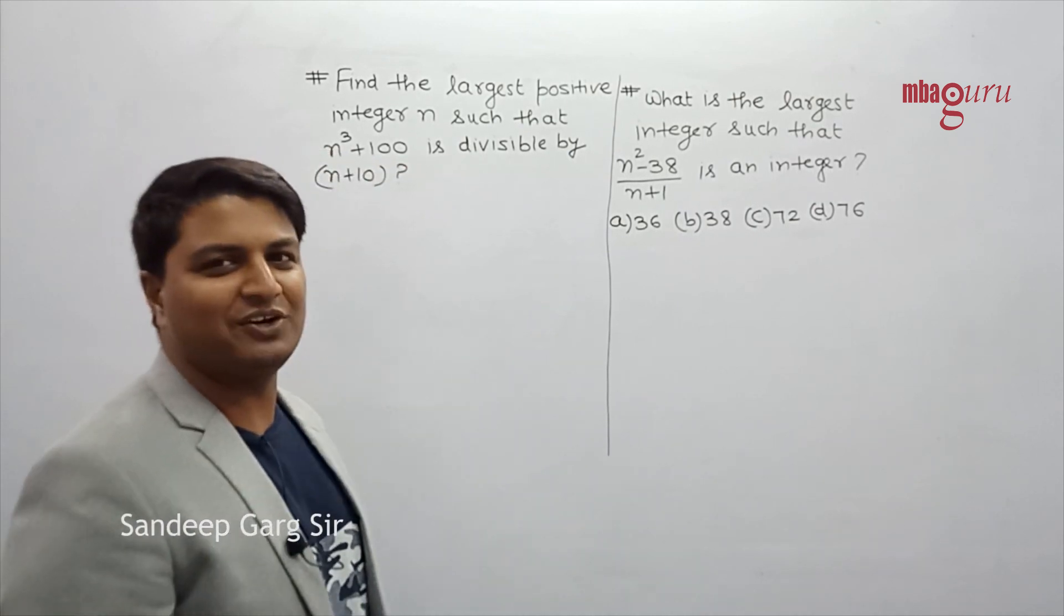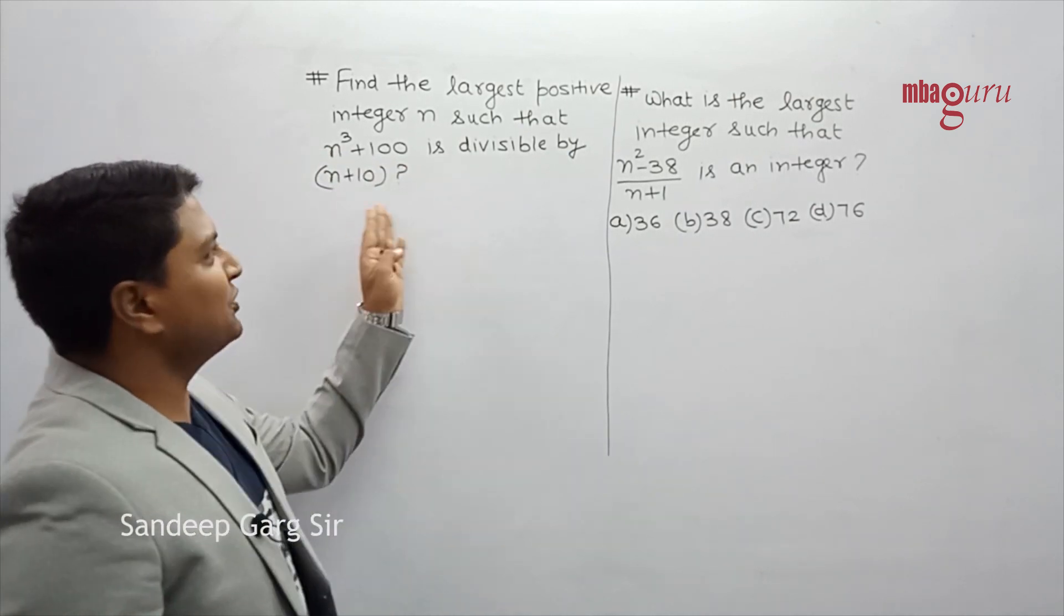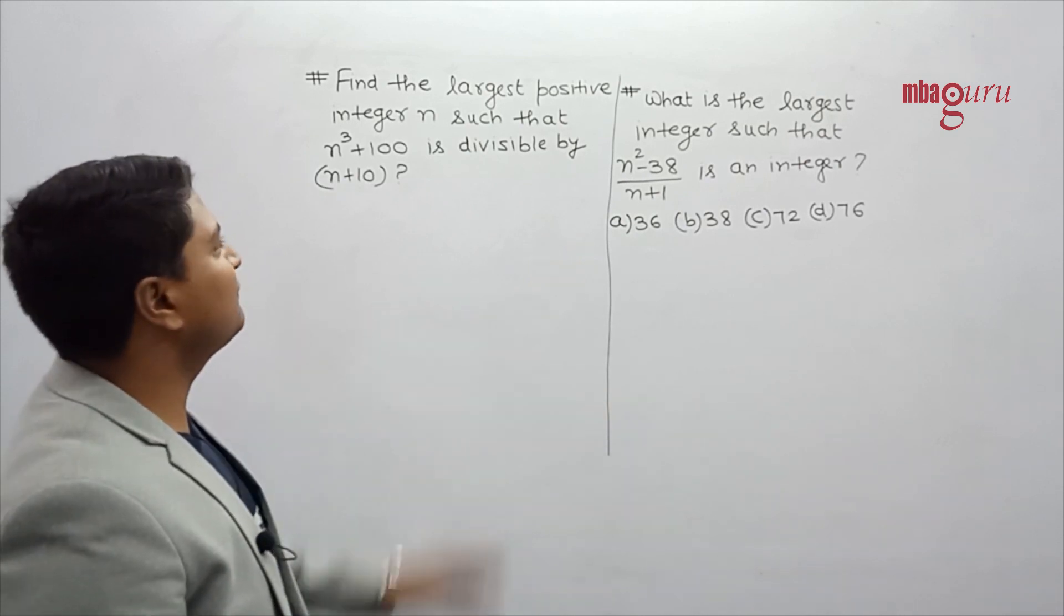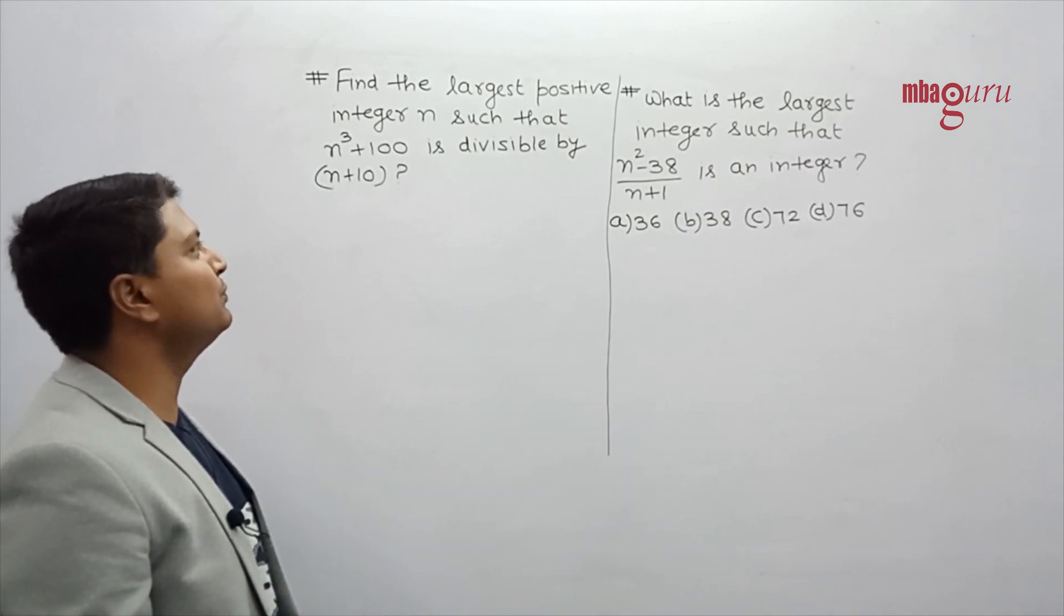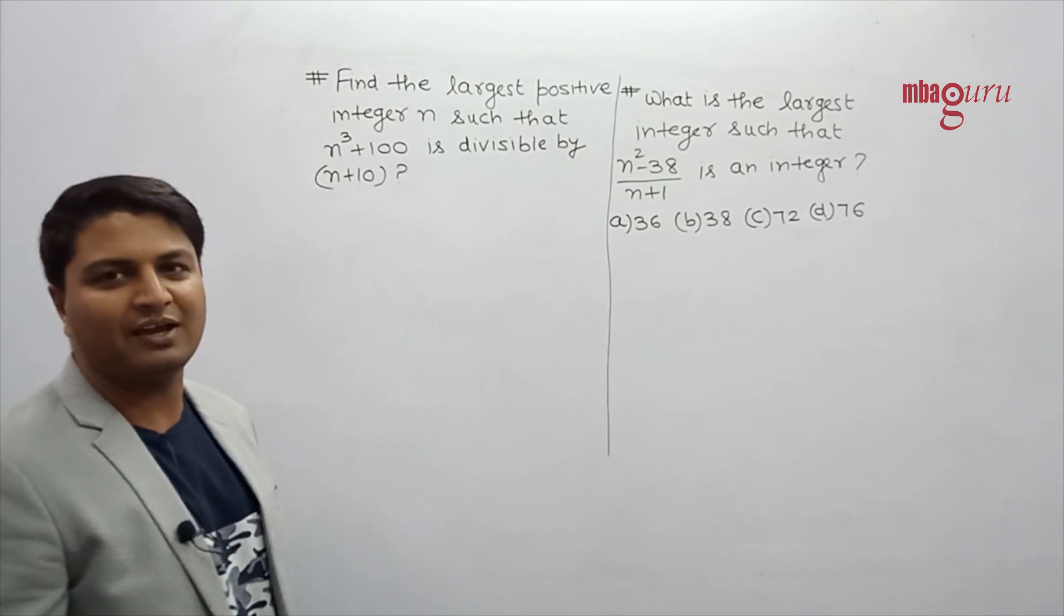Hello friends, let's see another question on integers. First question, find the largest positive integer n such that n squared plus 100 is always divisible by n plus 10.